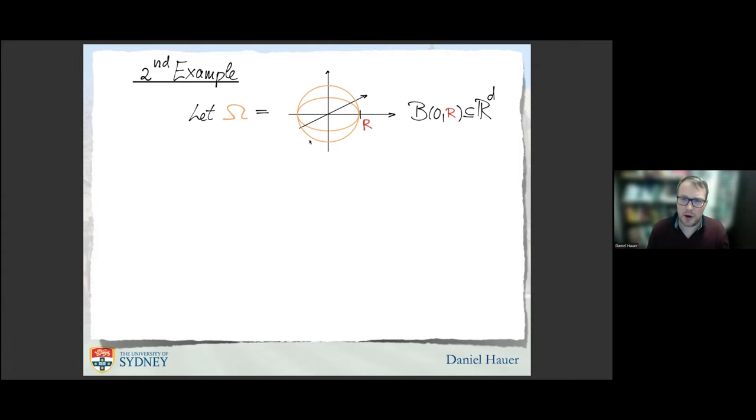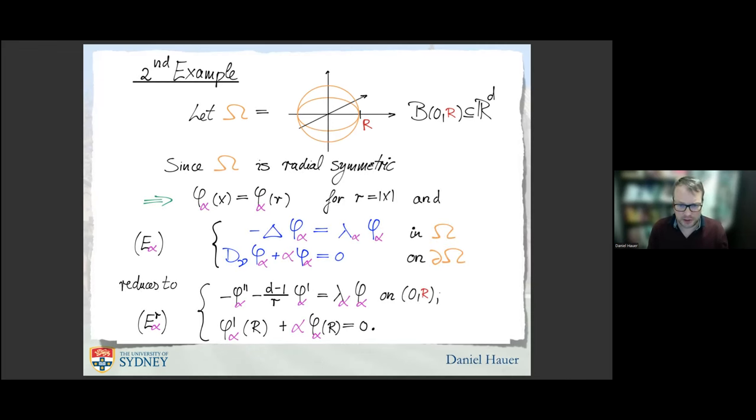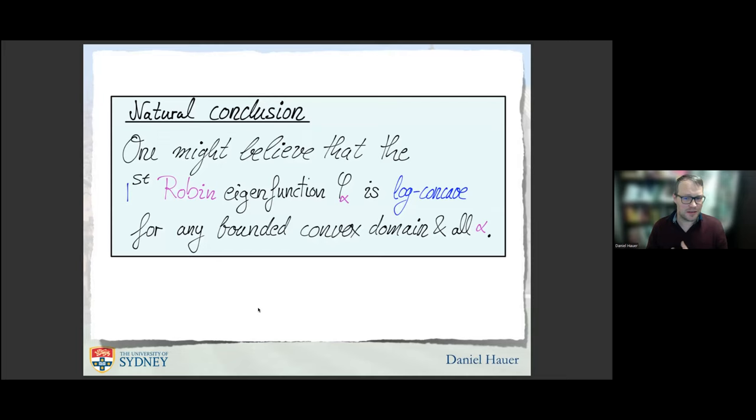On the ball, we have symmetry. When we look for the eigenvalue problem just for the zero potential case, it reduces to a second-order ODE. Then by using the shooting method, you can again show that φ_α is even concave. Concave implies log-concave. In both extreme cases, the ball is a smooth convex domain, the rectangle is a Lipschitz convex domain. So one could actually guess it's natural to think this could always be the case, that the first Robin eigenfunction is log-concave.